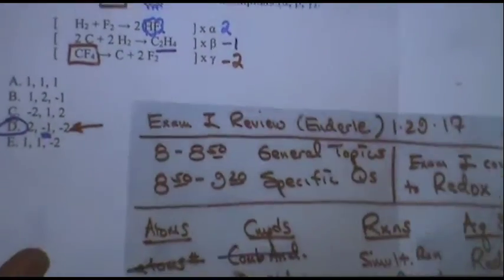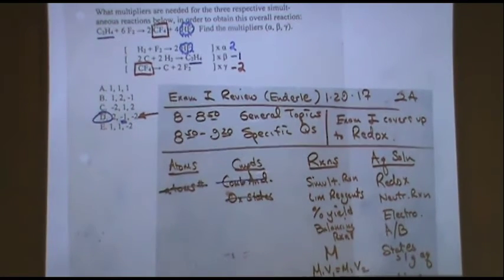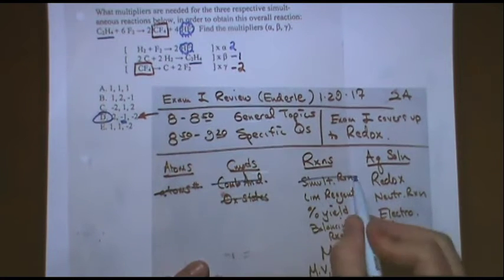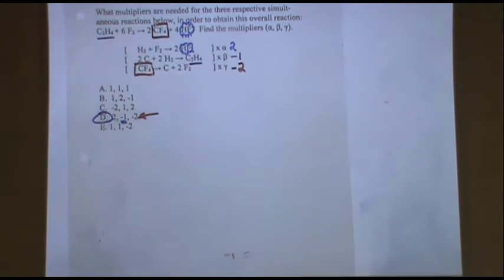We're going to do another one in class next time as well. Let's do some balancing reactions. Let's see if I can just pull out kind of a tough one. Because I think you'd rather see a tough one, right? Would you rather see a tough one with variables or a tough one with numbers?